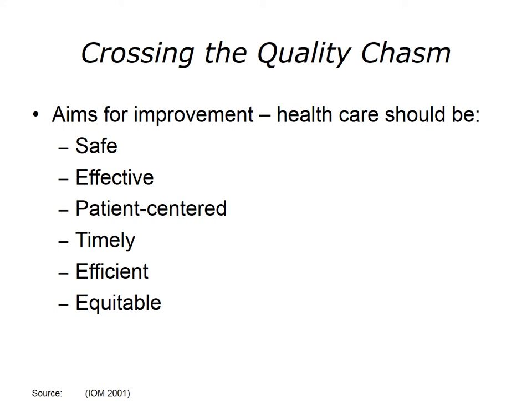Timely, that is, waits and harmful delays should be reduced for those who receive and give care. Efficient, reducing waste and unnecessary cost. Equitable, which means providing care that does not vary in quality because of personal characteristics such as ethnicity or socioeconomic status. The IOM was quite high-reaching in its recommendations by calling all organizations in health care to adopt these aims and to work toward reducing the burden of illness in the United States. In addition, the report called on Congress to authorize and appropriate funds to track and monitor national progress toward these aims. These six aims very clearly address the quality, cost, and access problems we discussed earlier.